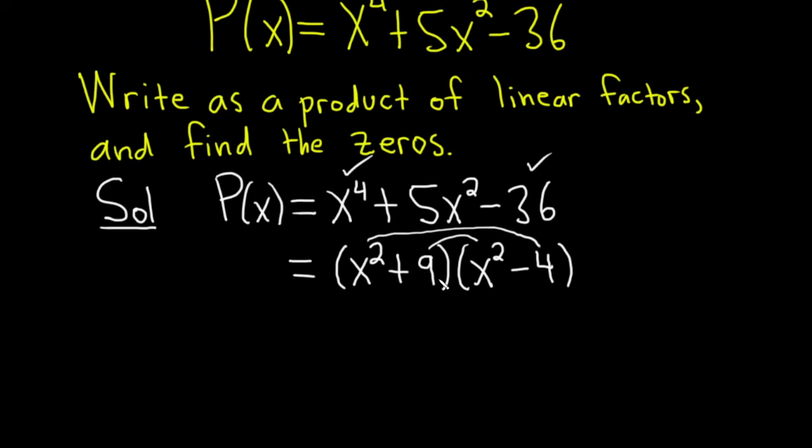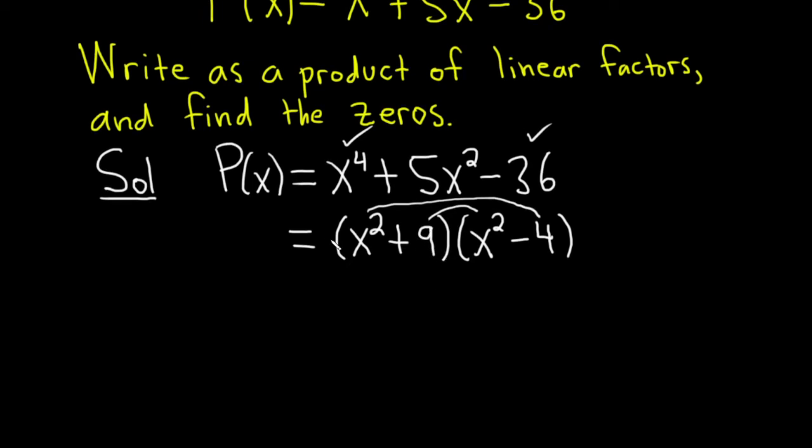Now we want linear factors, so we have to keep going. So this piece here, x squared plus 9, actually does factor. This is actually going to be x plus 3i times x minus 3i. And that's basically because if you have a squared plus b squared, that's equal to a plus bi times a minus bi.